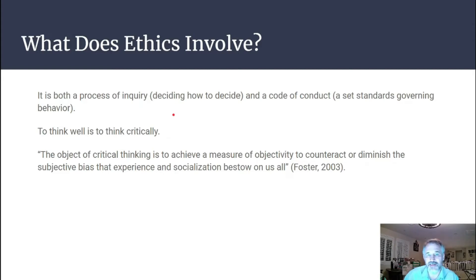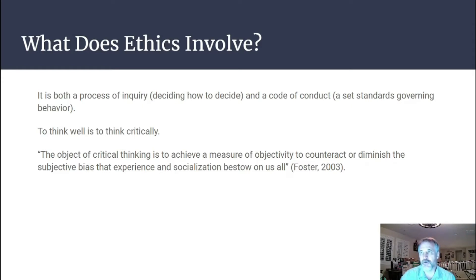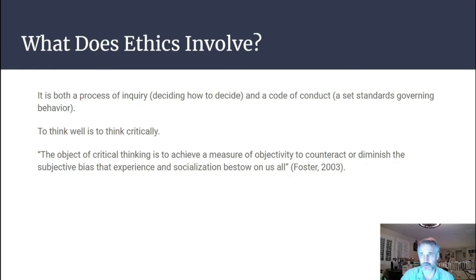Ethics involves both a process of inquiry — deciding how to decide — and a code of conduct governing behavior. To think well is to think critically. The object of critical thinking is to achieve objectivity and counteract the subjective bias that experience and socialization give us all. One troubling thing for any scientist — which I've discussed with other science classes — is that you want to take your bias out of the equation, which is why studies use double-blind designs.